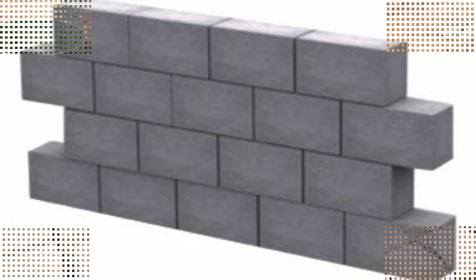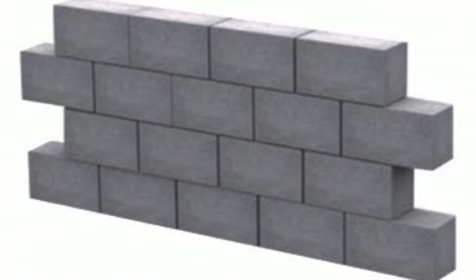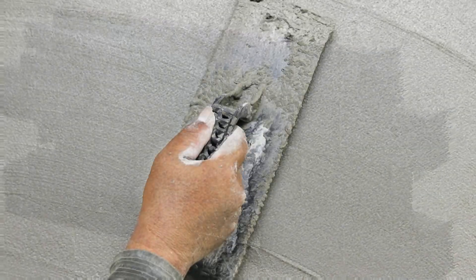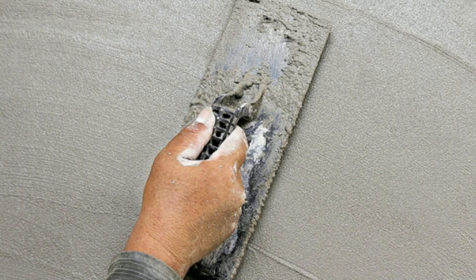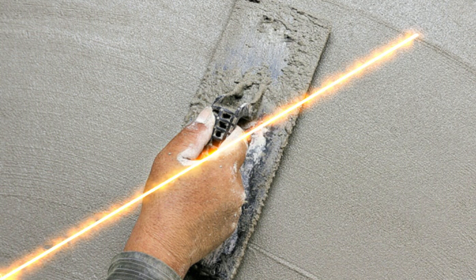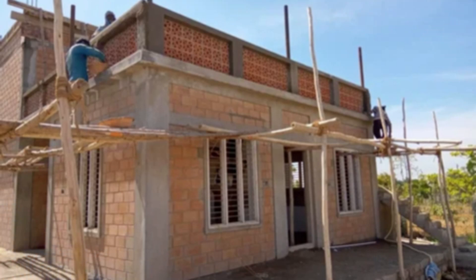Since interlocking bricks have a smooth surface and are connected with each other, there is no need for plastering on interlocking brick walls. If desired, inner plastering can be done, but outside plastering is not required.